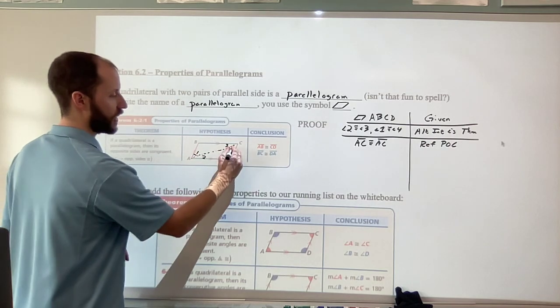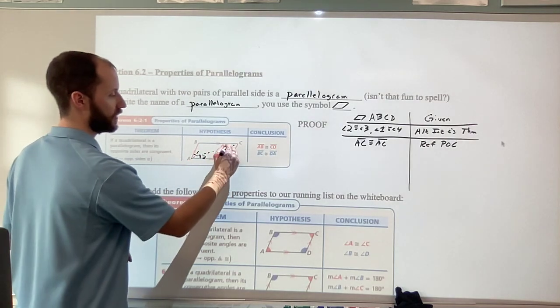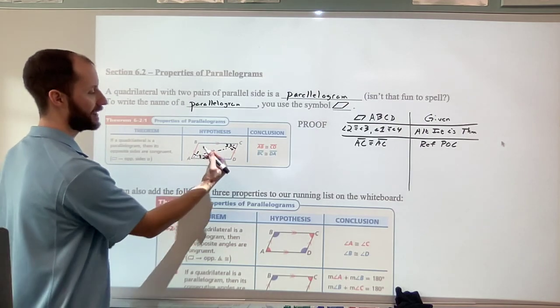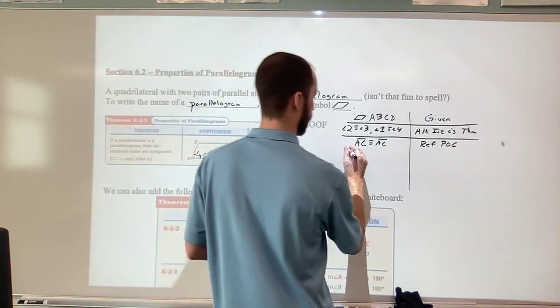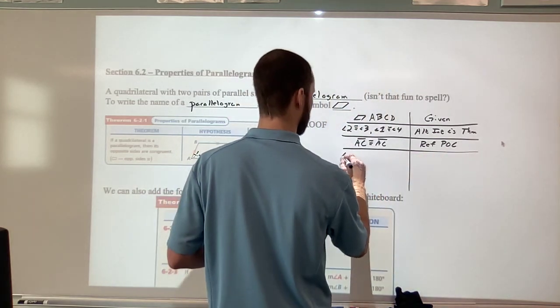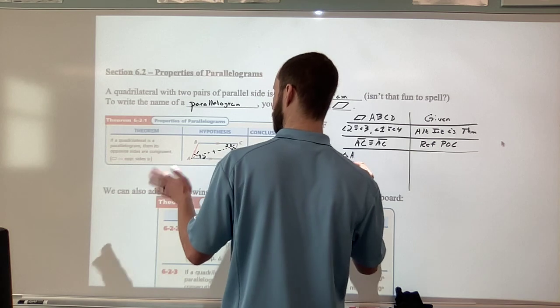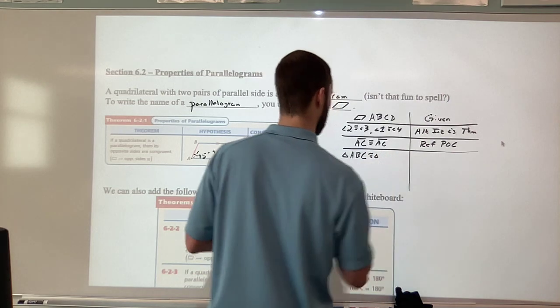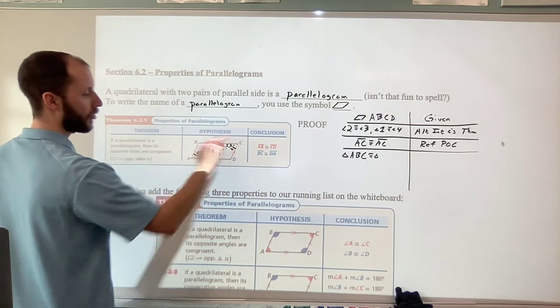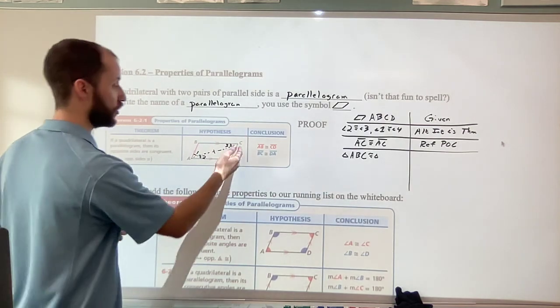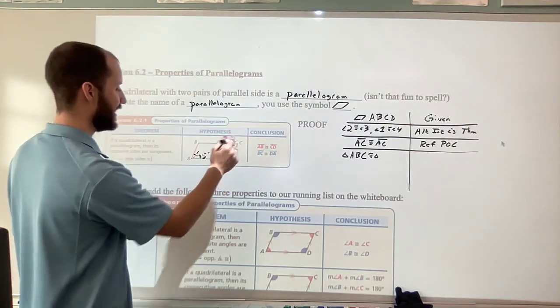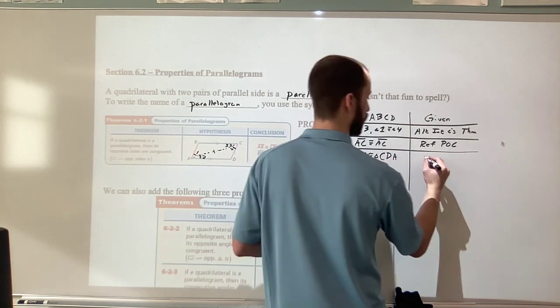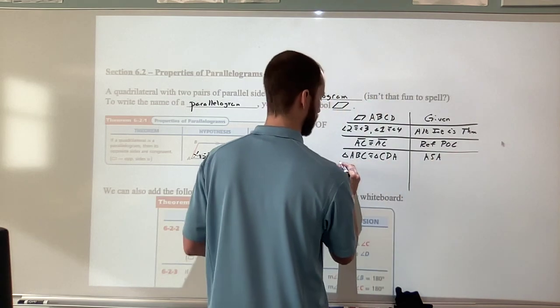So we have angle one congruent to angle four, angle two congruent to angle three, and we have side AC congruent to itself. So we have angle, side, angle. So I think I got the order of the points wrong earlier. I want to get them right. Triangle ABC congruent to triangle—now I did the short side, then the long, so when I do the other triangle, I want to do the short side, then the long. So CDA gets those corresponding parts to line up in the correct order.